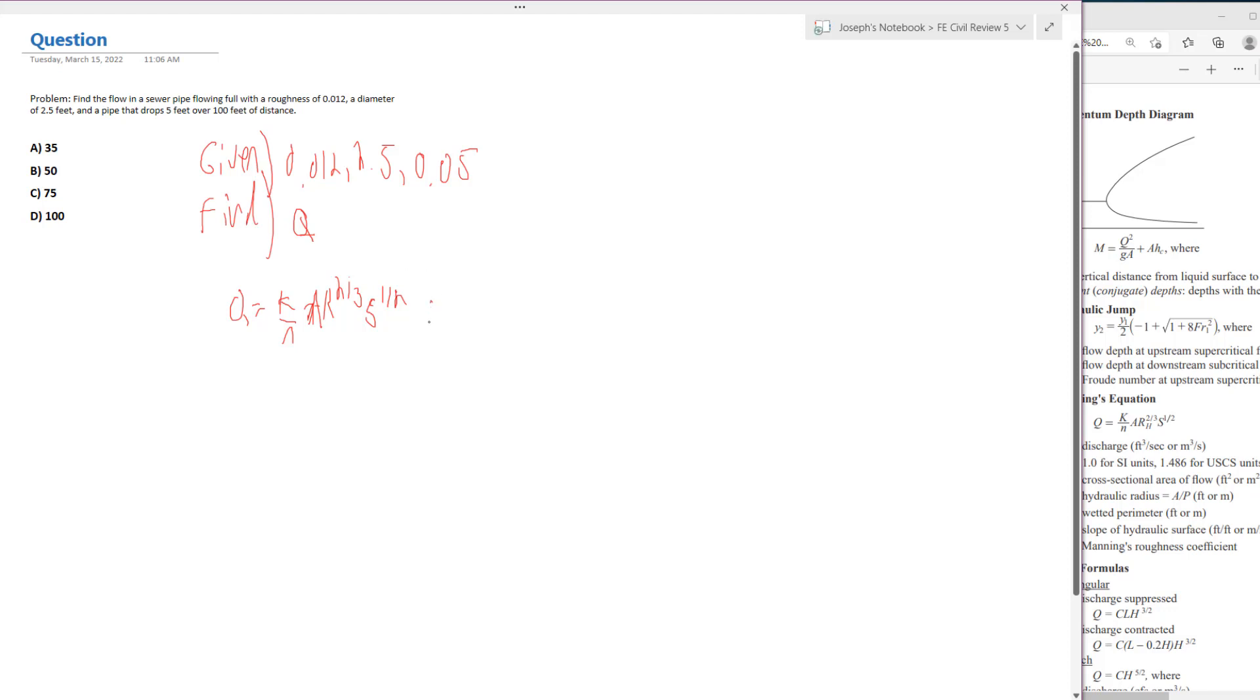So for the K value here, for this kind of problem, we're going to have 1.486, and you can see that in the FE manual for USCIS units, it's 1.486. Over N, the roughness is 0.012.